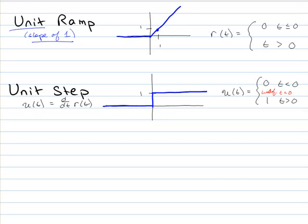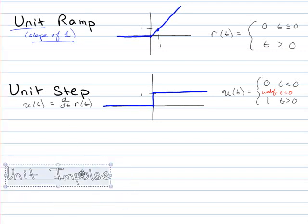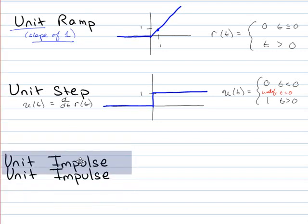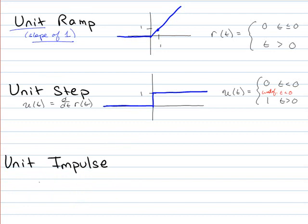Now if we take the derivative of the unit step, we're going to end up with what we call the unit impulse. So we're going to call the unit impulse lowercase delta. And it's going to be the derivative of the unit step. So think about what we've got here. So for this section, the slope is 0, right?